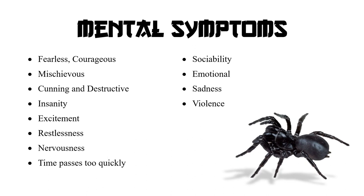Cunning and destructive — जिनका behavior काफी destructive होता है। Insanity — mental condition एक level पे disturbed हो जाना। Excitement — वो काफी excited रहते हैं, हमेशा खुश मिज़ाज़, colorful और appealing personality। Restlessness — a very important characteristic in spider group, both in patients and in the spider itself. Nervousness is also prominent. Time passes too quickly — spider group के patient के लिए time बहुत जल्दी बीतता है।